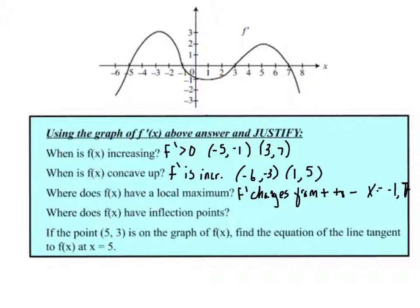Inflection points occur when f' changes direction. That occurs at x equals 3, negative 3, excuse me, 1, and 5.